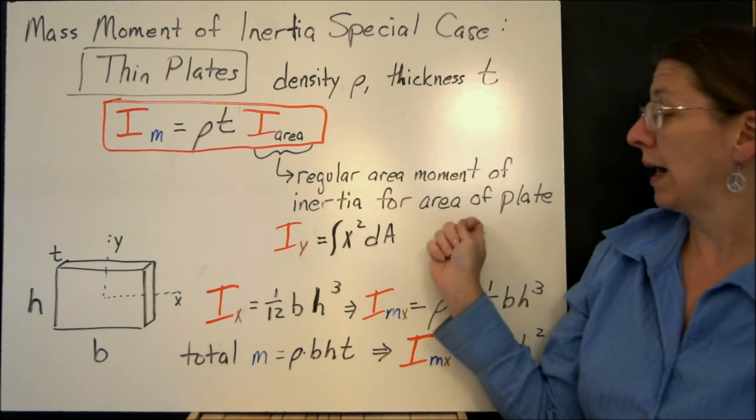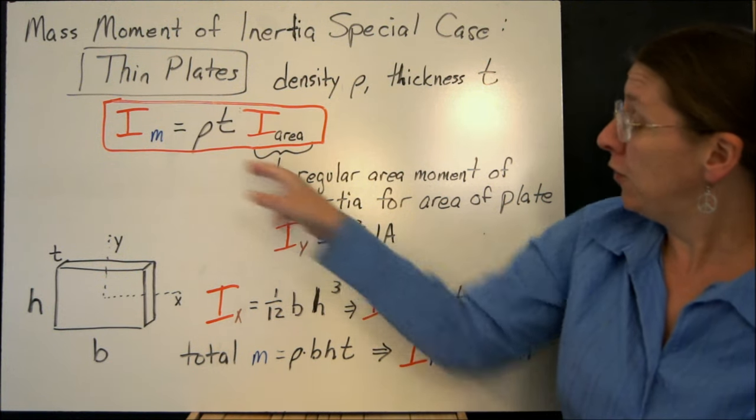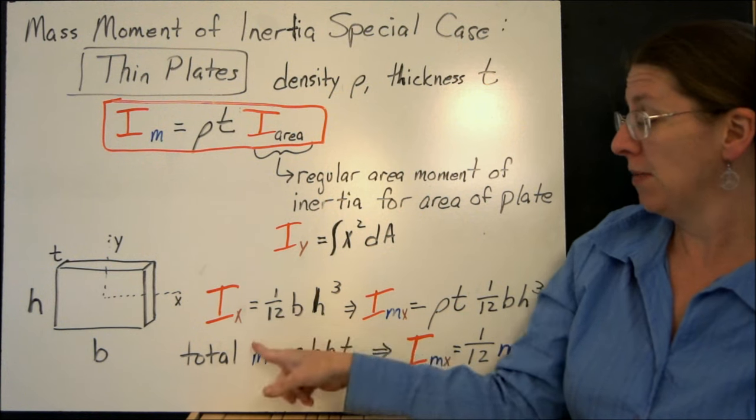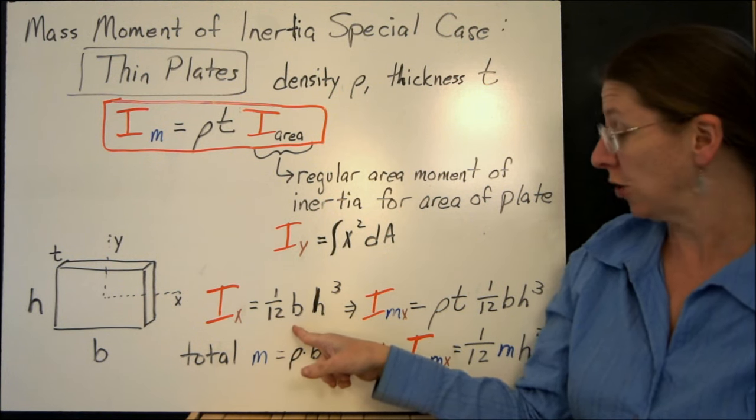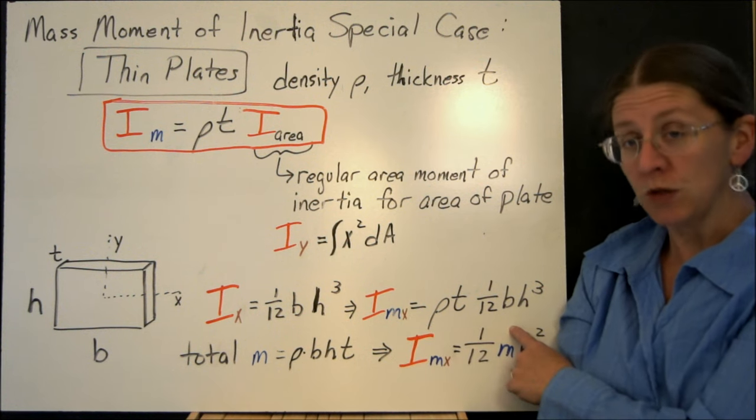So this is our regular one where, for example, I_y would be the integral of x² dA. If you plug that in here for my rectangular plate, what that looks like is the area moment of inertia would be 1/12 bh³. So my mass moment of inertia would be ρt times 1/12 bh³.